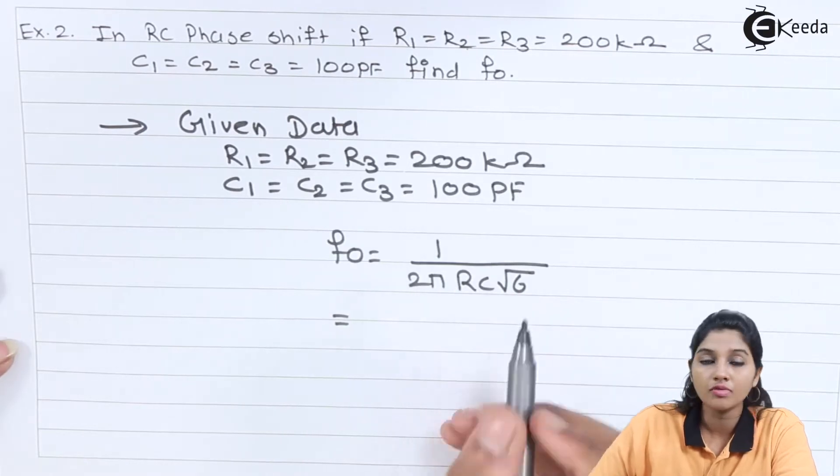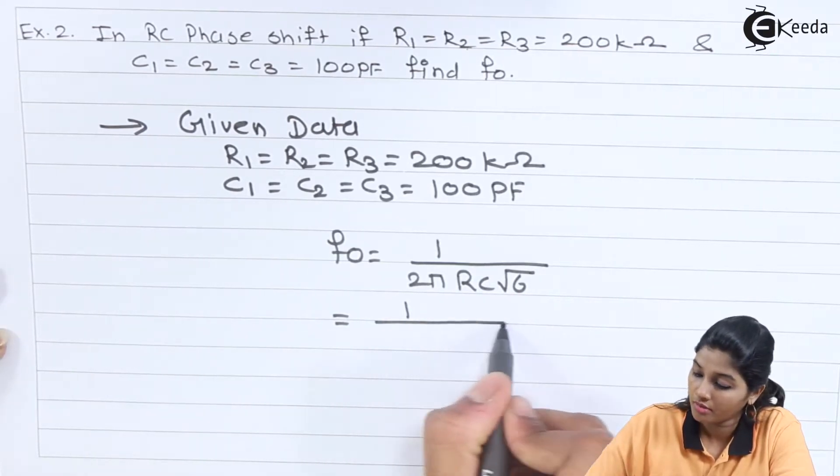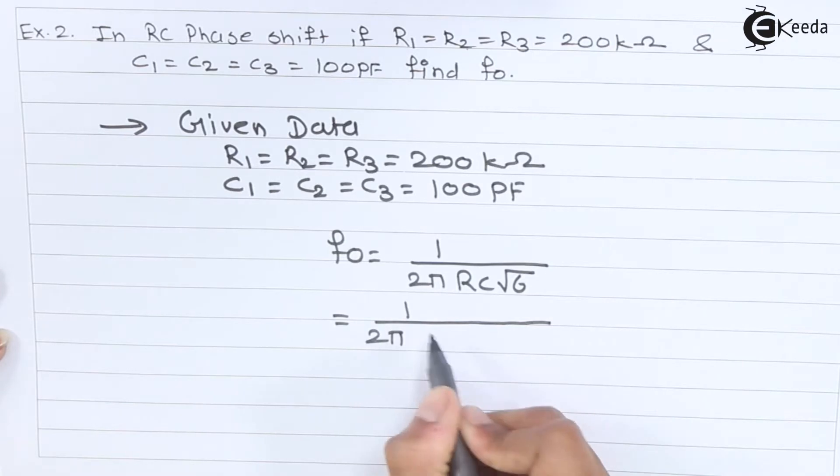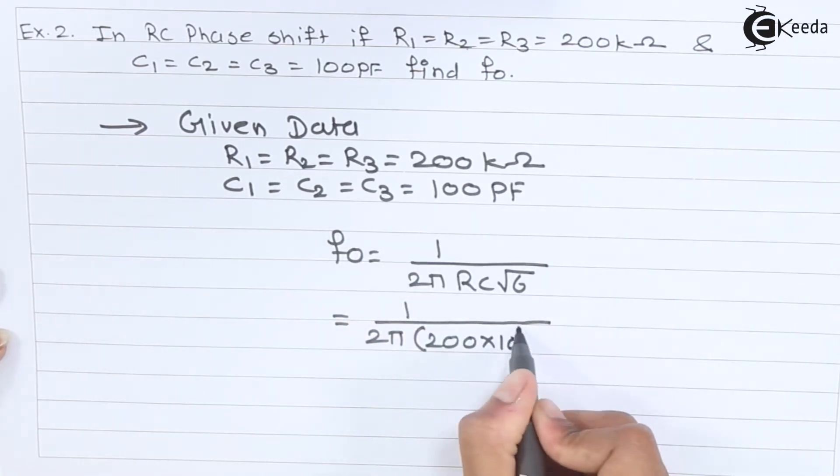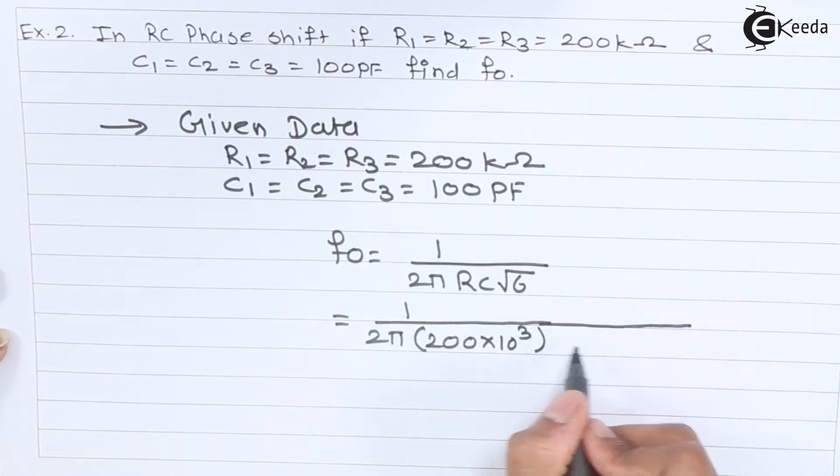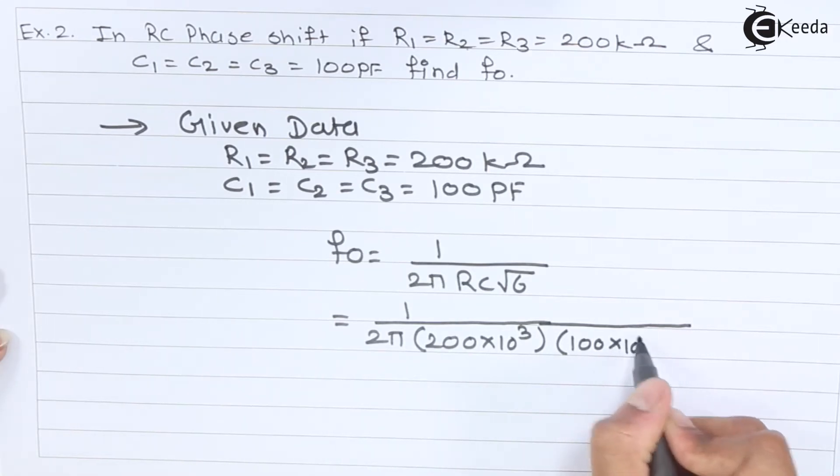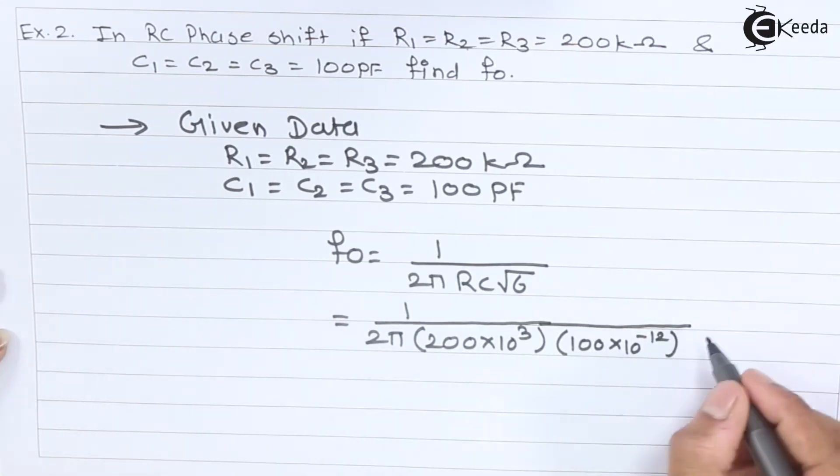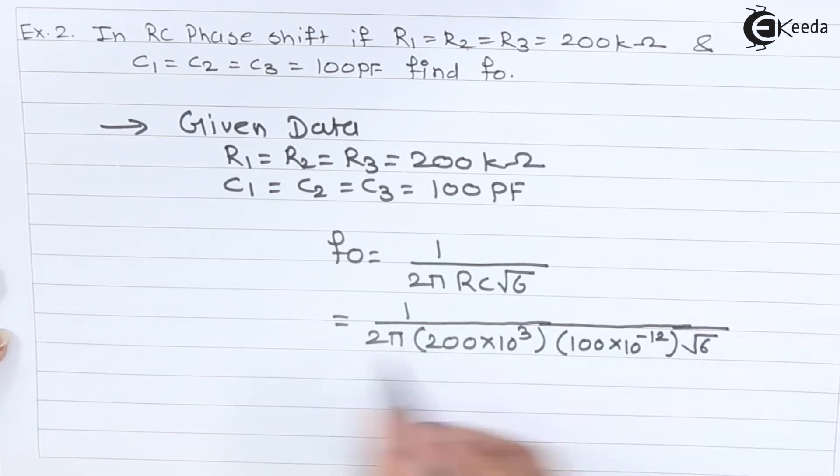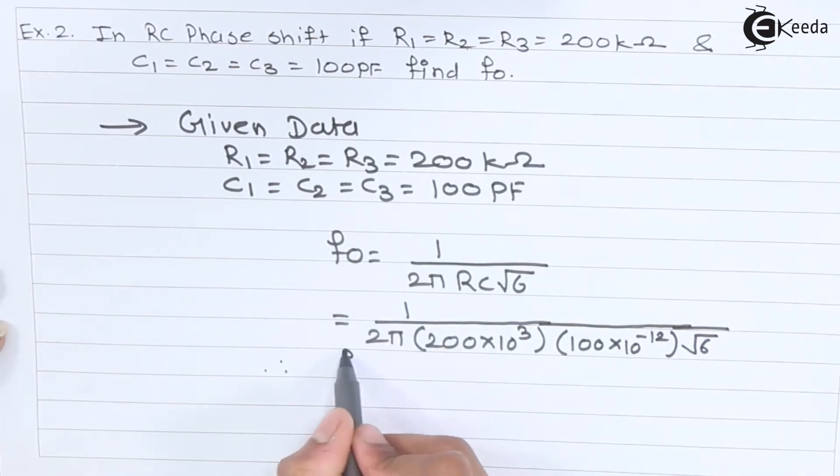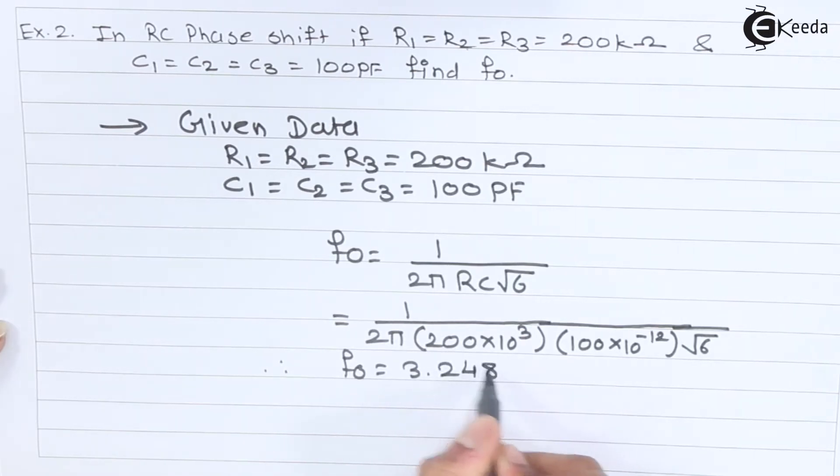Therefore frequency of oscillation is calculated by 1 upon 2 pi, value of R is 200 into 10 raise to 3, that is 200 kilo ohms, and C is 100 into 10 raise to minus 12, that is 100 pico farad, into root 6. Therefore we will get F0 is equal to 3.248 kilohertz.